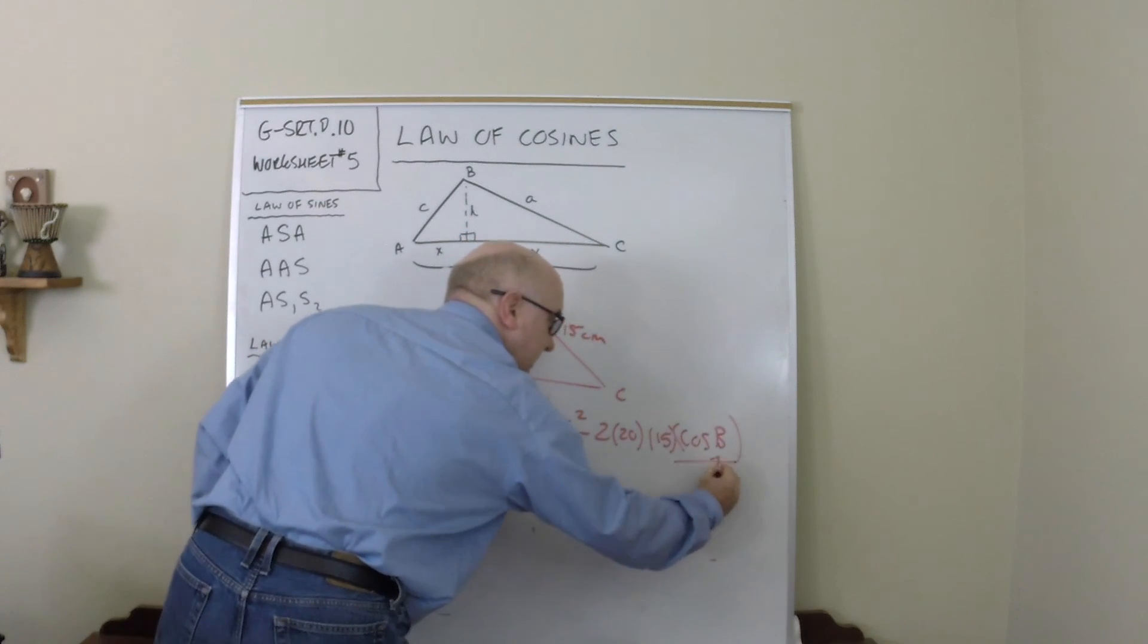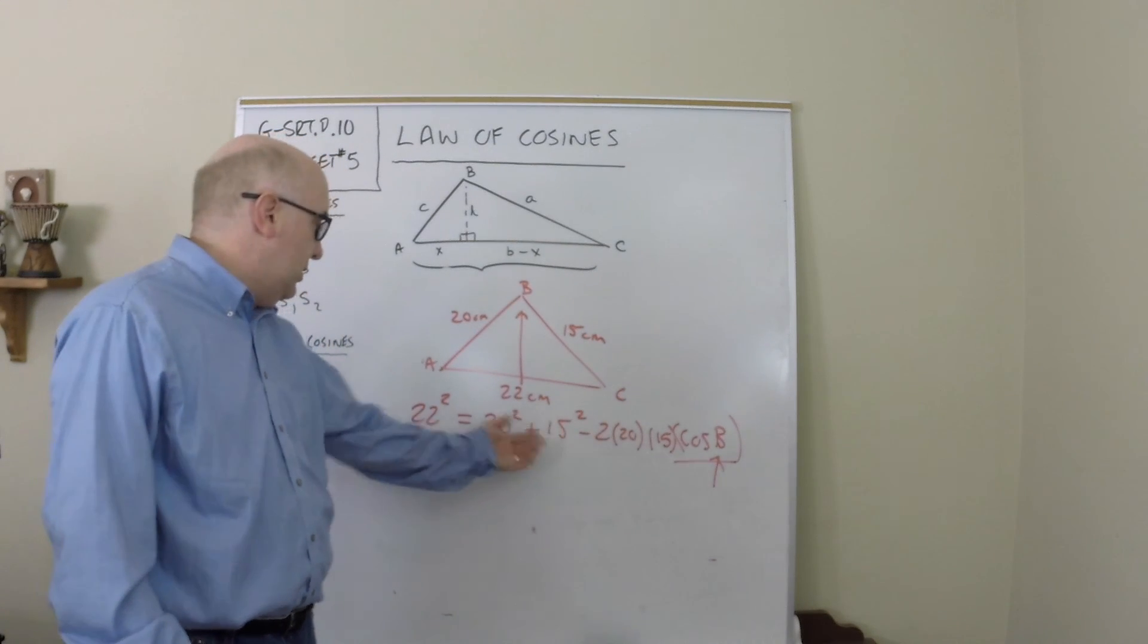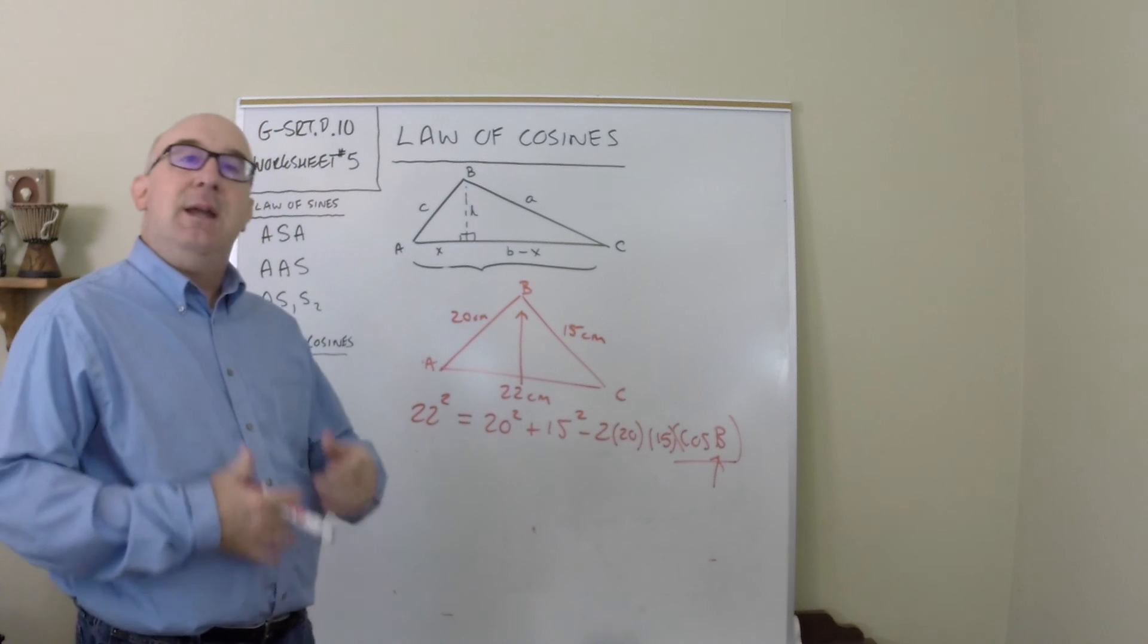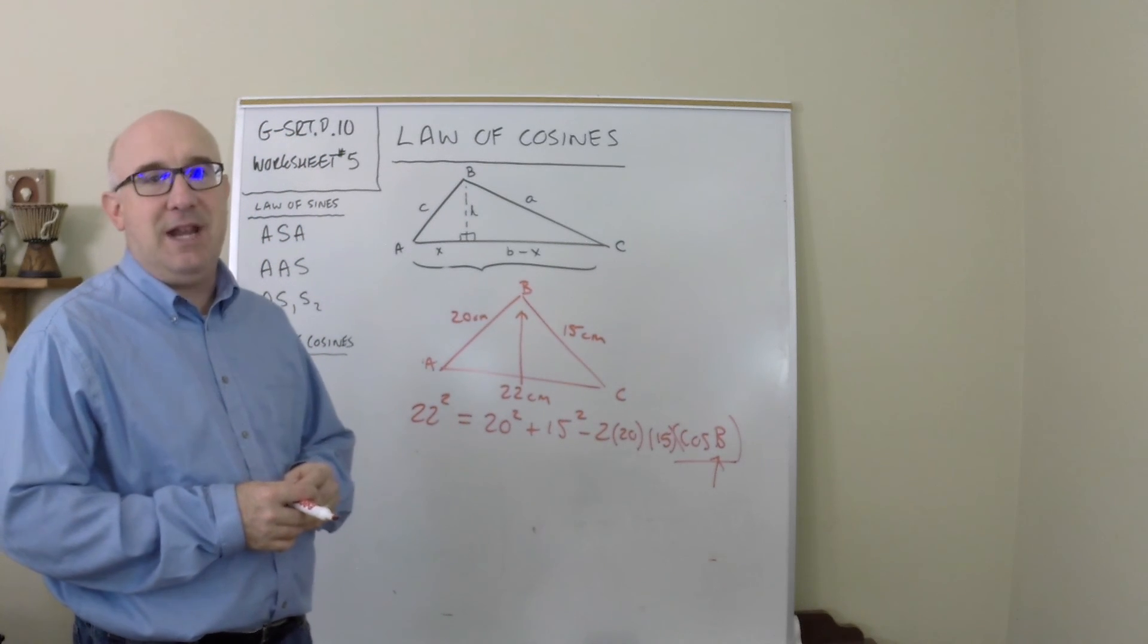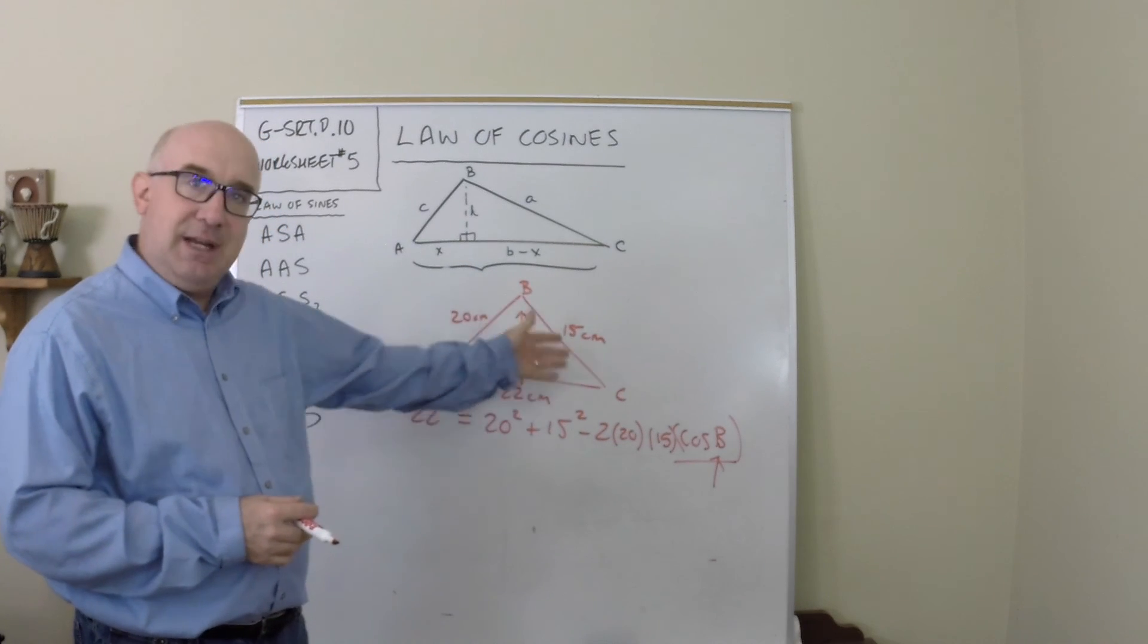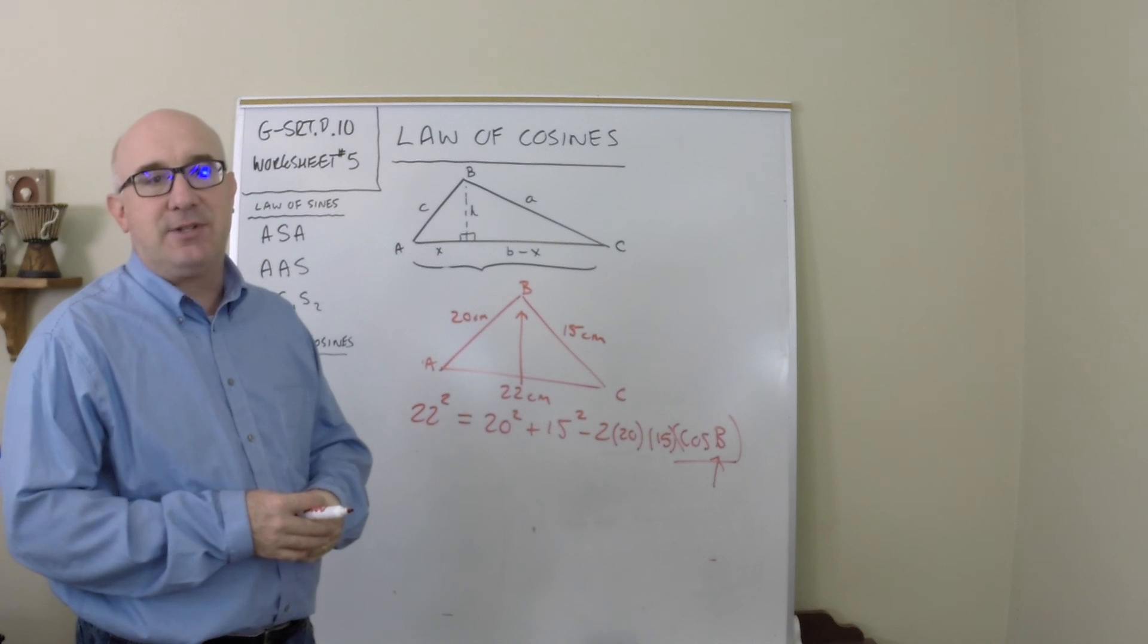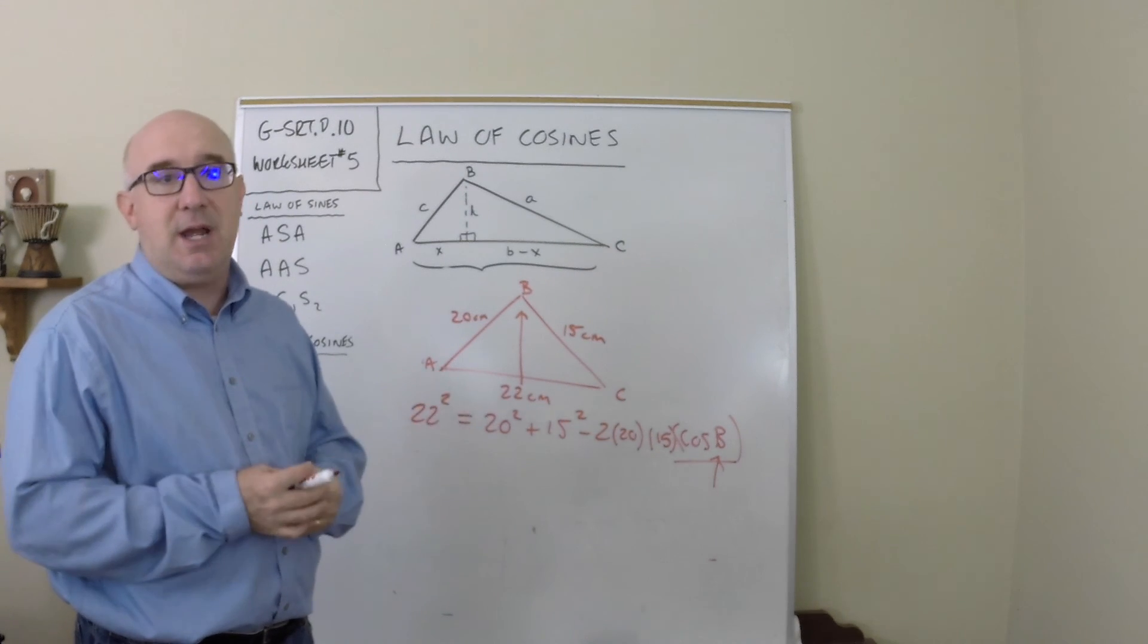There is your missing variable. Basically using just order of operations, you'd move values over, divide some out, and find the inverse of cosine to obtain the angle. Once you have that angle, you can then begin solving for the other angles and sides using the law of sines, which is what I would use at this stage.